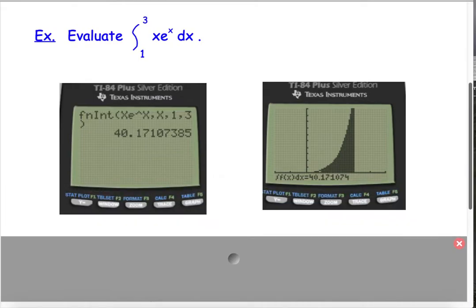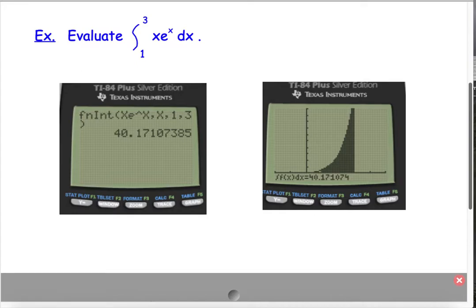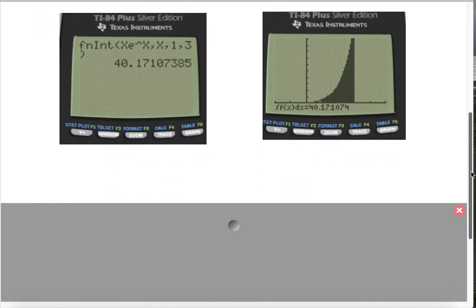So, on the calculator, you're going to go to math and do fnInt. You can do it from the home screen, or you can do it from the graph. Your choice. If you're on the graph, you would press second trace into that, get into the calculate menu, and then you put in your limits of integration, which are the lower limit first is 1, and the upper limit is 3. And then you get your answer, which is an approximation, so 40.17 is approximately the area under that curve and above the x-axis. So, if you're not too familiar with using the calculator for this, I'd hit pause. Go ahead and try it yourself and make sure you get it to work correctly.